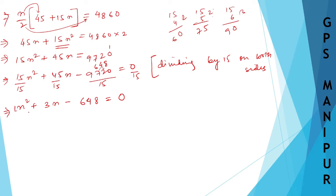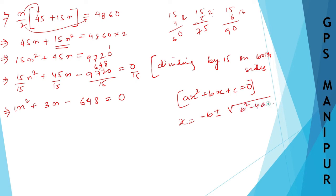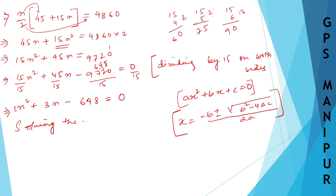Now you can see this is a quadratic equation. How to solve a quadratic equation? Suppose there is AX squared plus BX plus C equal to 0 — this is the general quadratic formula. Then X is equal to minus B plus or minus root over B squared minus 4AC, divided by 2A. This is the formula you have to know by heart.